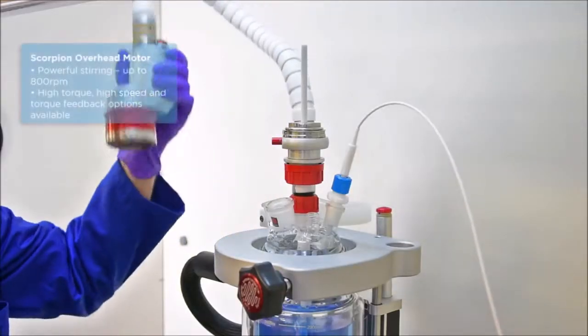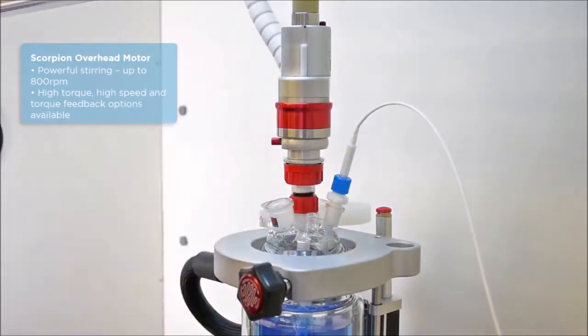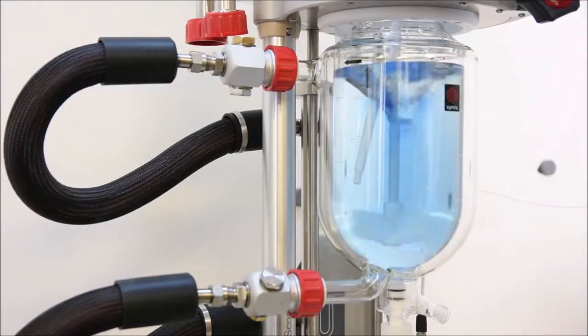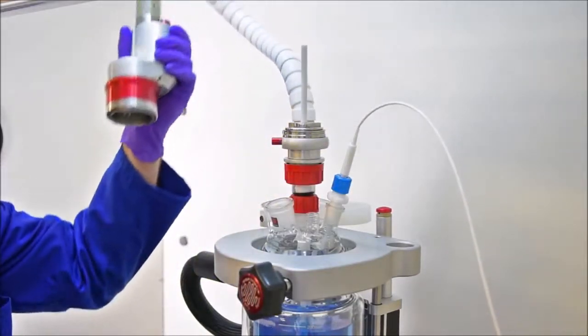Offering speeds of up to 800 RPM, the Scorpion overhead stirrer motor is easily clicked into place with no awkward scaffolding to deal with. The quick release system disconnects the stirrer motor, ready to be stored away on the frame.